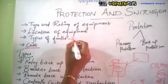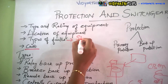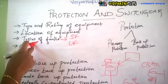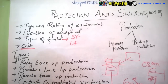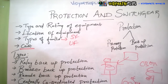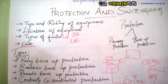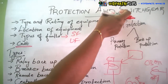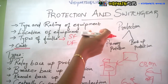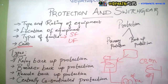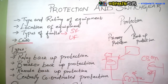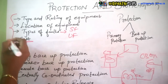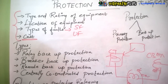The type of faults — there are symmetrical faults and unsymmetrical faults, which we will see in a later case. Depending on the type of faults, we have to select the relay. Next is the location of the equipment — whether in an indoor or outdoor system. Based on location and the type and rating of equipment, we have to design the relay and circuit breaker.